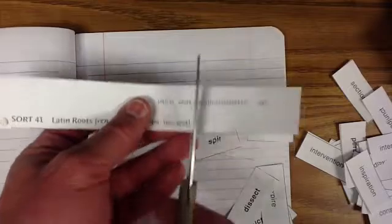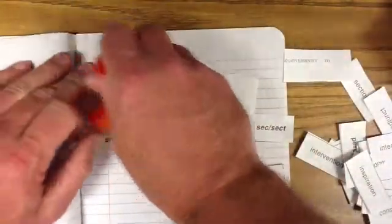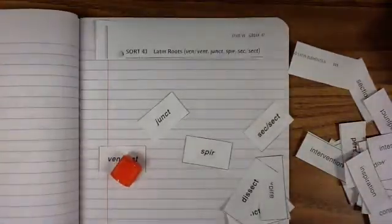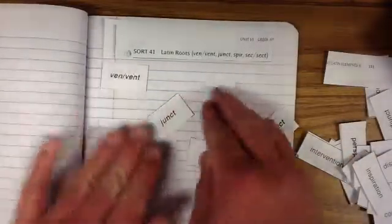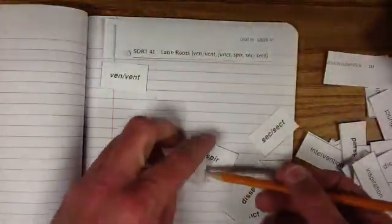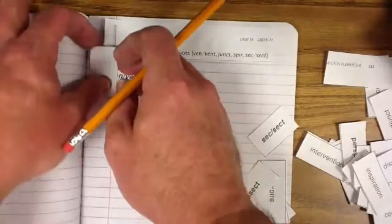All right, so we're going to set these up. First thing we're going to do is we're going to take this and cut off the end here. Turn that over, put a little glue on it. And we're going to throw that up at the top. All right, make sure you've got that ready to go. Now we've got to find our pencil, and let's put our things up at the top. We've got ven, vent. We've got junct.